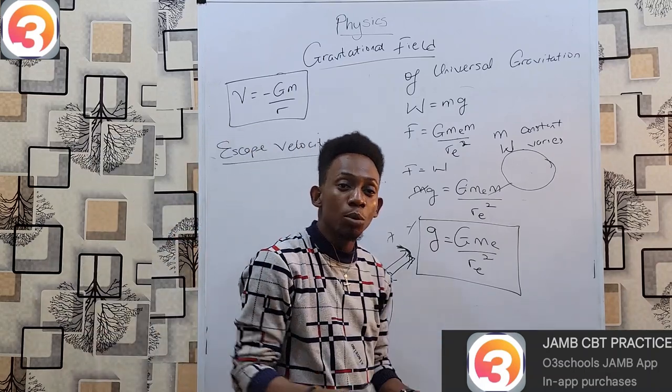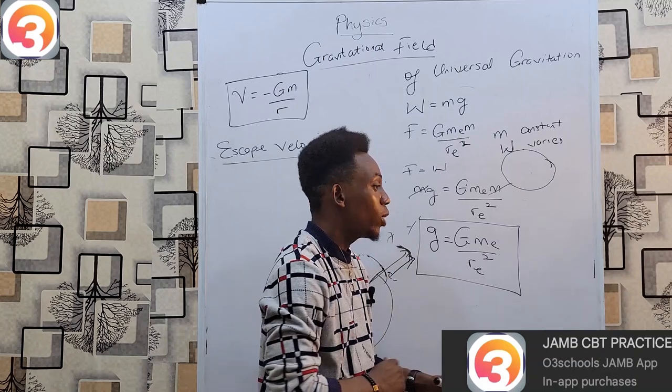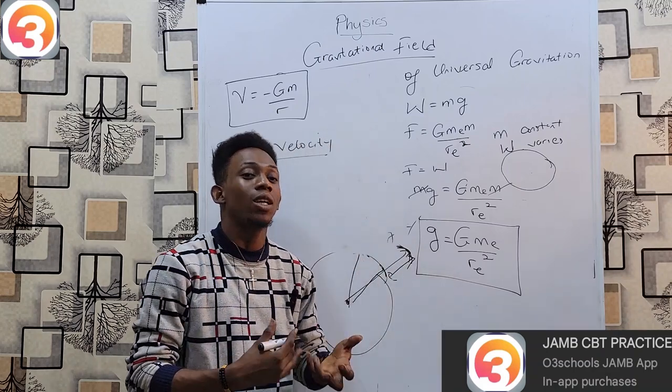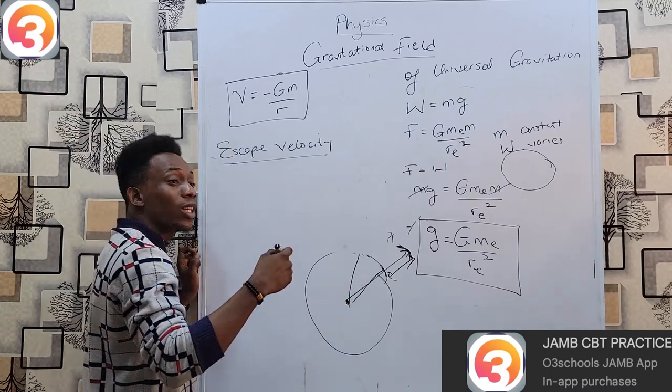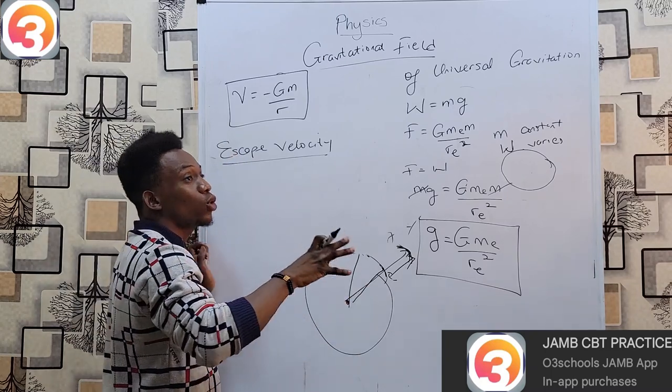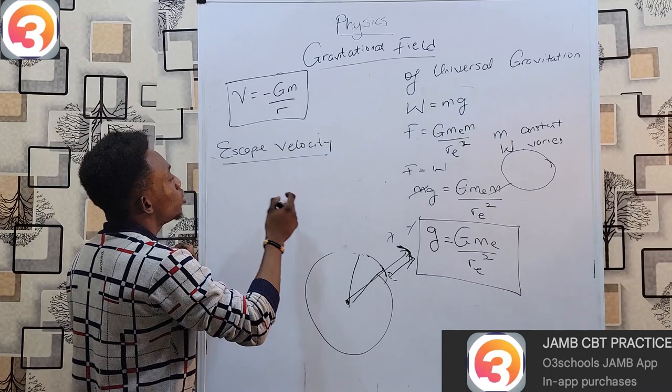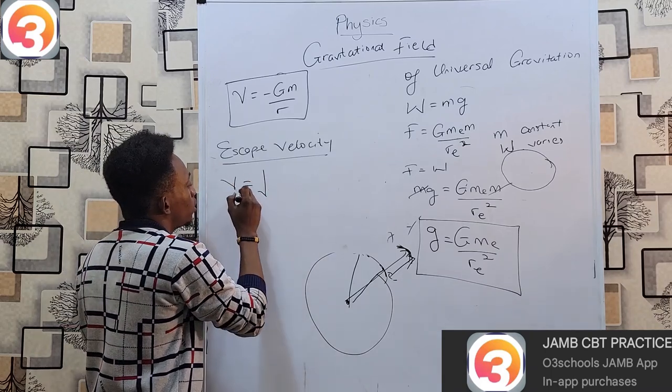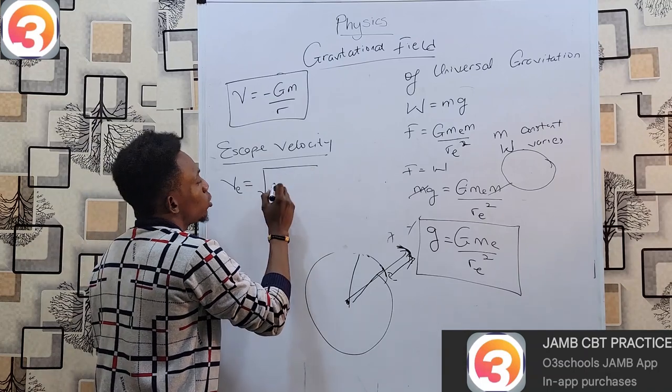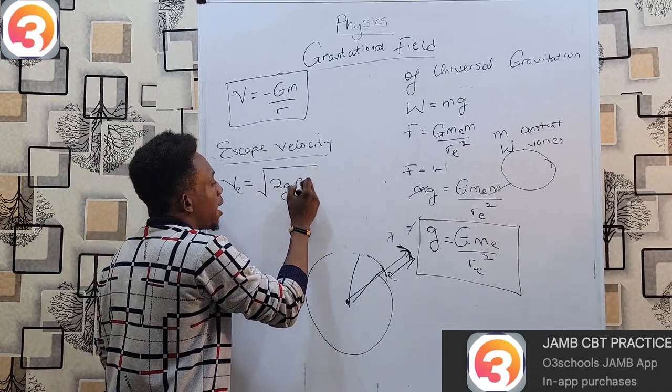Escape velocity is the minimum velocity required for an object to permanently escape the effect of earth's gravitational field. Once you move at that velocity, you can actually escape from the effect - the force of gravity seems to lose its hold on you. That velocity is given by ve = √(2g re), square root of 2g re.